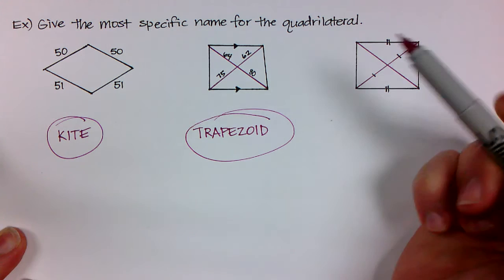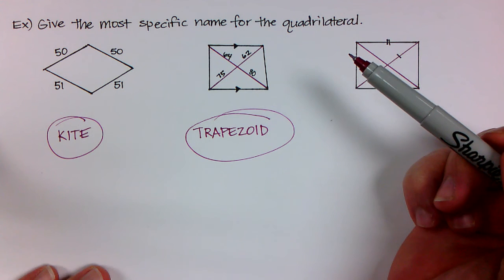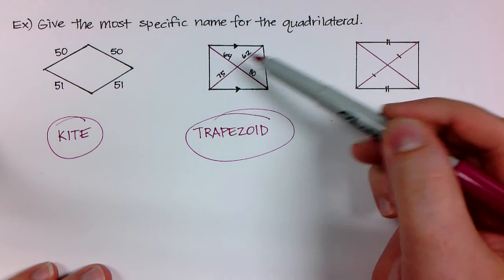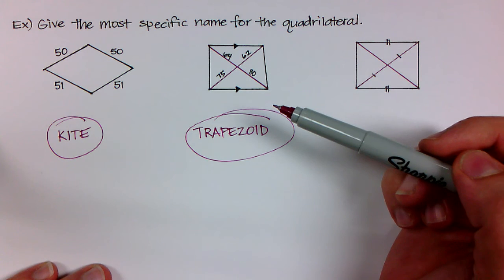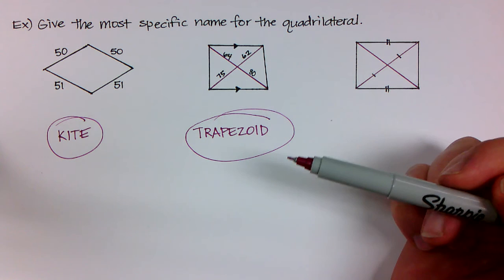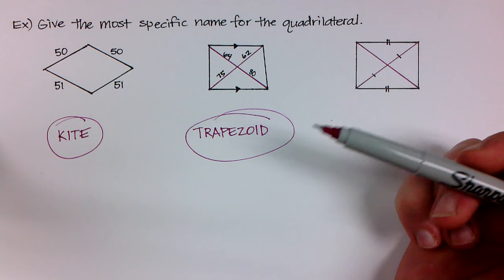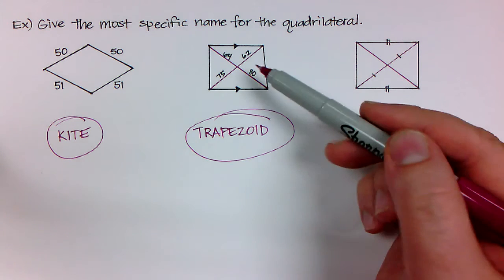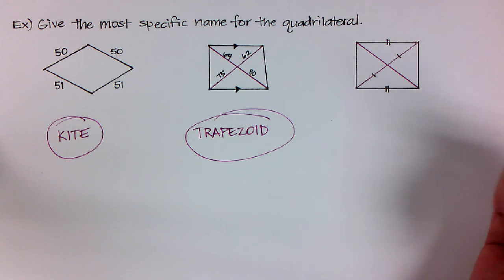I don't have enough information to know that it is an isosceles trapezoid because it's not telling me that the legs are exactly the same. Also, since the diagonals are not bisecting one another, it's not a parallelogram. So I don't know that the outside segments are parallel to one another. So it's just going to be a trapezoid.